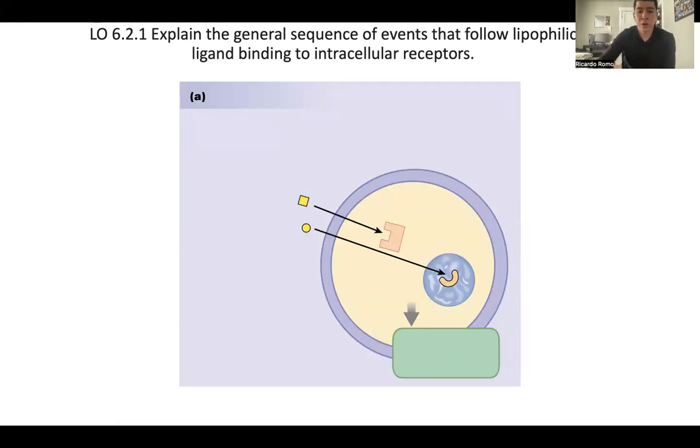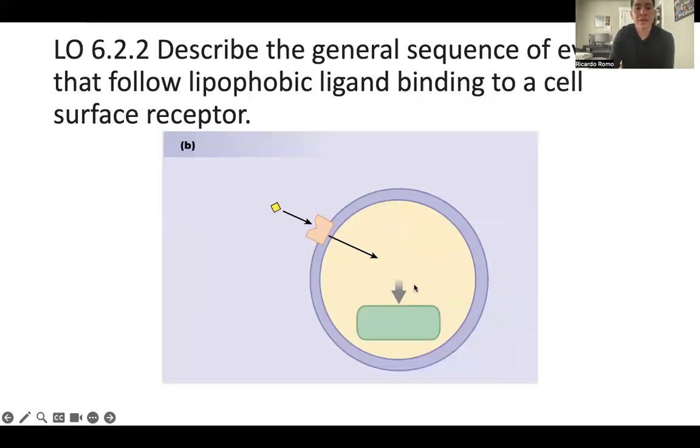And then let's go to our second one. Describe the general sequence that follow lipophobic ligand binding to a cell membrane or cell surface receptor.